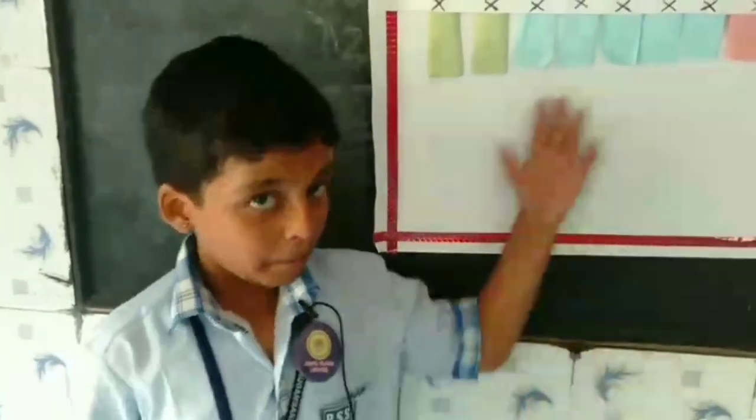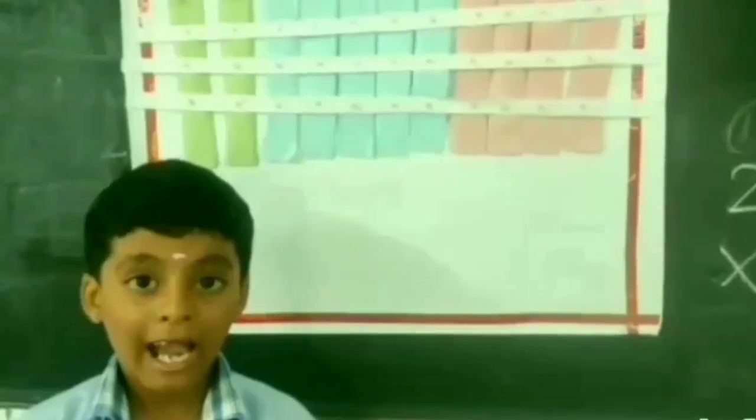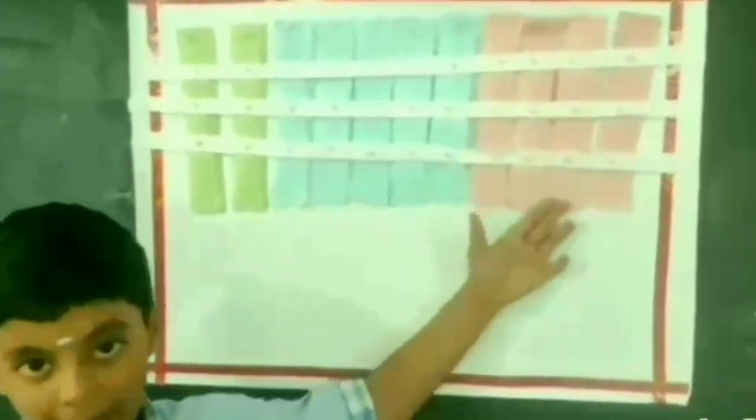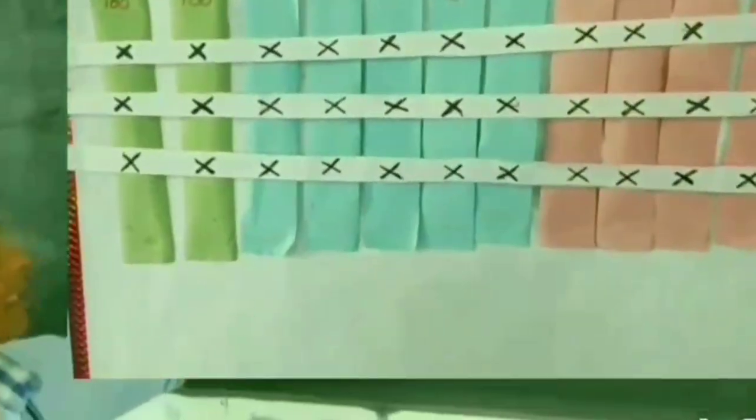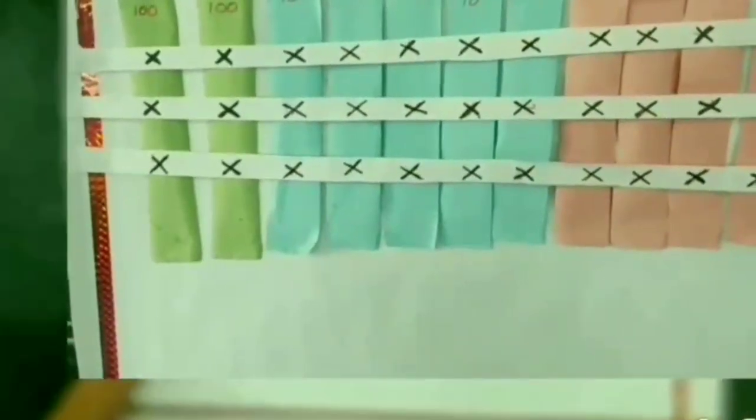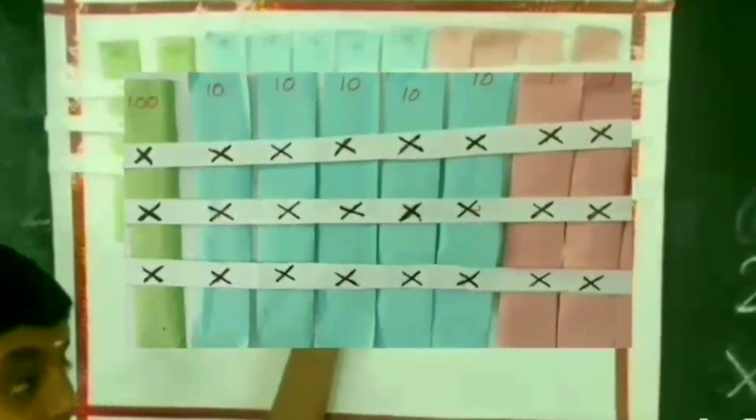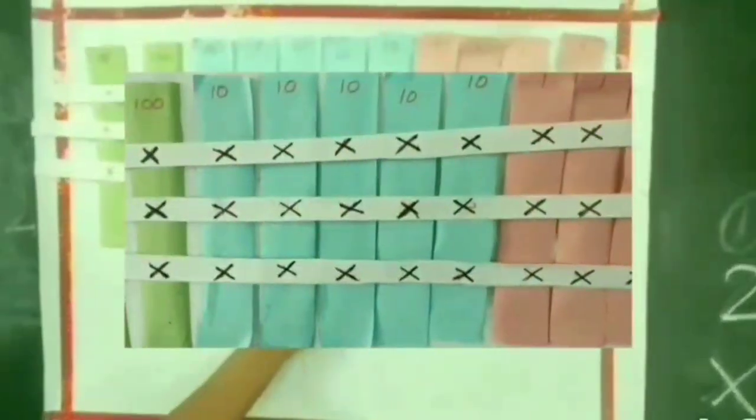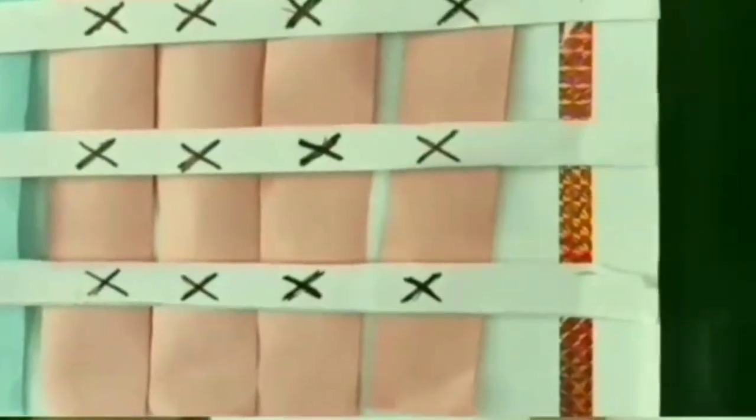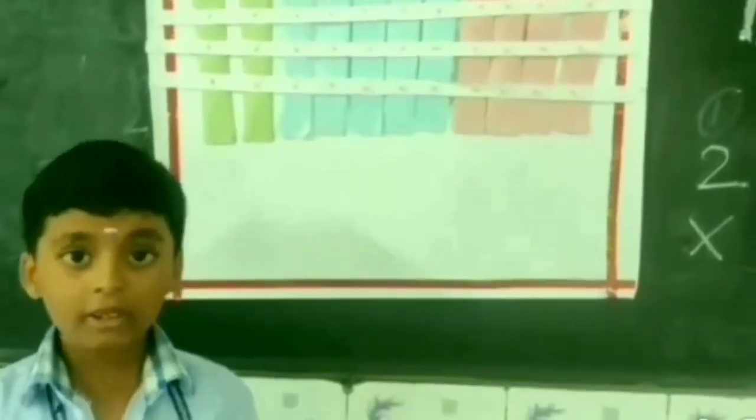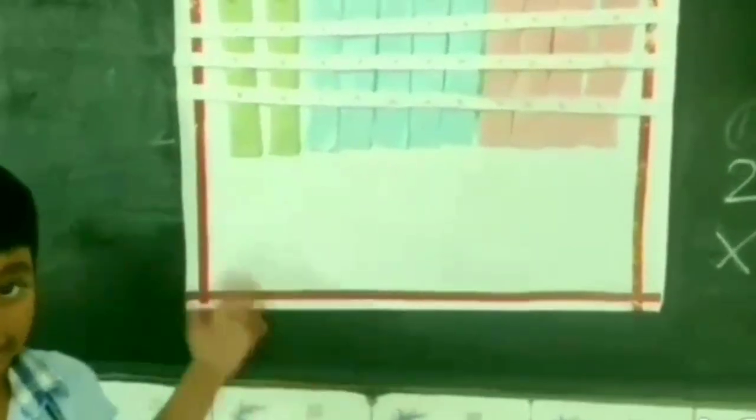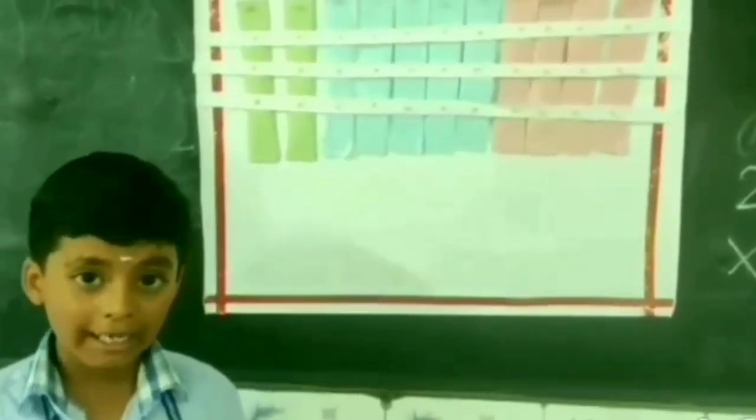I am going to use paper strips for doing this multiplication. I have 3 color paper strips with me. Green color strips with 100 written on it, blue color strips with 10 written on it, pink color strips with 1 written on it. I use these strips to create number 254.